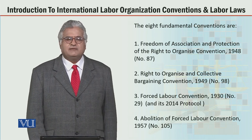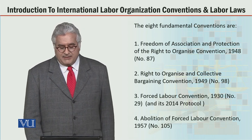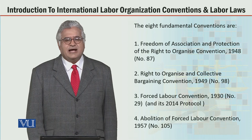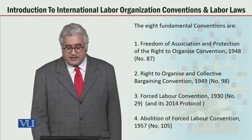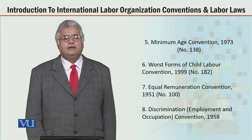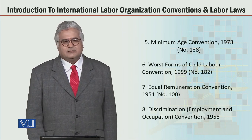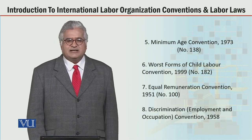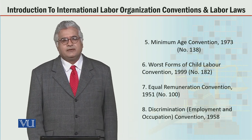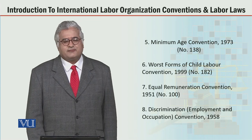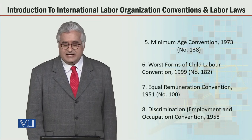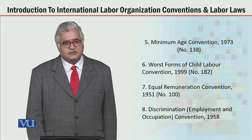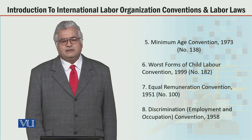The fourth convention is the Abolition of Forced Labor Convention, 1957, and its number is 105. The fifth fundamental convention is the Minimum Age Convention 1973, convention number 138. The sixth convention is the Worst Forms of Child Labor Convention 1999, and its number is 182.